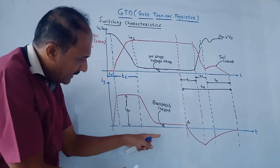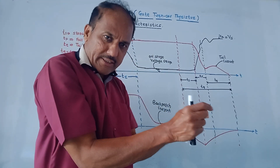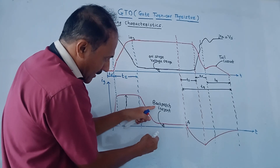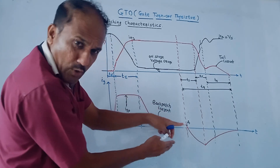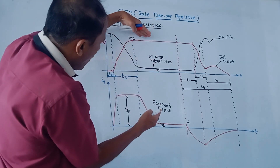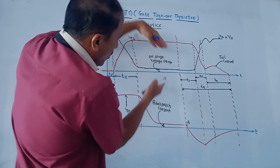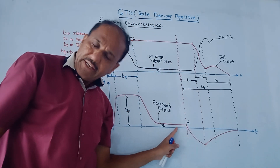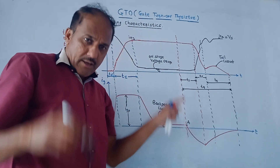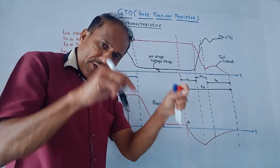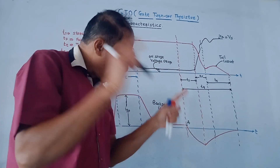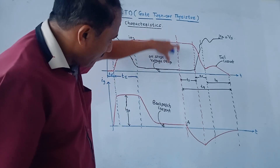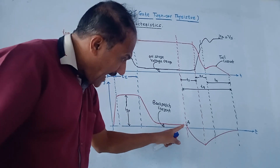When a continuous small back porch current is applied, the values of anode current and anode voltage remain constant up to point A. At point A, the turn off process starts and we apply a negative gate pulse.